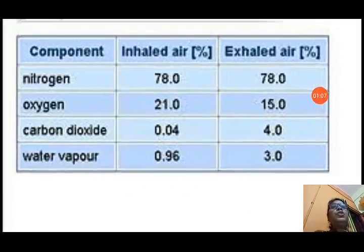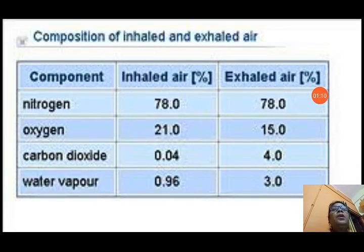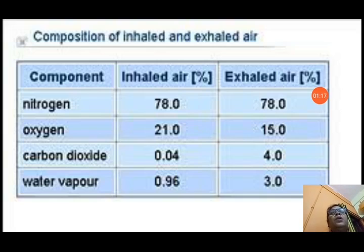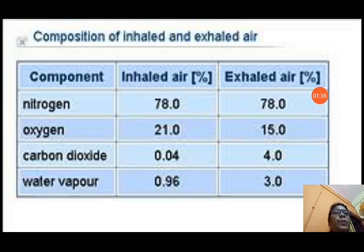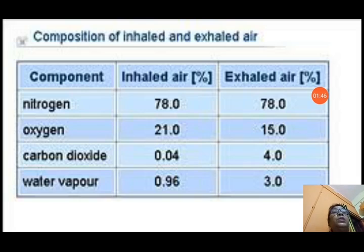Now let us look at the composition of inhaled and exhaled air. Nitrogen is 78% and remains unaffected at 78%. Oxygen is 21% in inhaled air but becomes 15% in exhaled air, meaning that much oxygen is taken up by the blood. Carbon dioxide is 0.04% in inhaled air but becomes 4% in exhaled air, so the amount of carbon dioxide increases greatly. Water vapor is 0.9% in inhaled air but becomes 3% in exhaled air, meaning some water vapor also comes out when we breathe out.